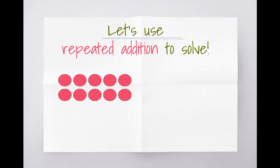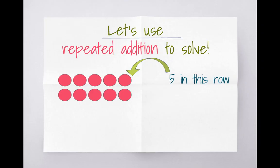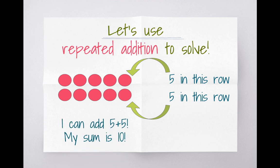Now let's see if we can use repeated addition to solve this array. In that first row we counted one row of five circles, so I have five in the first row. I also have five in the second row. So our repeated addition is: five plus five, which equals ten.